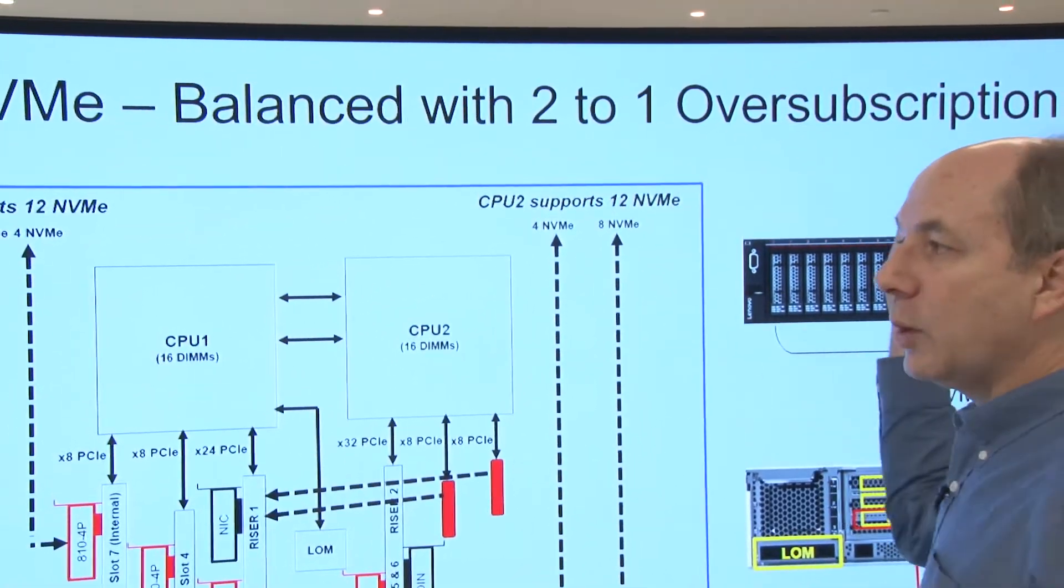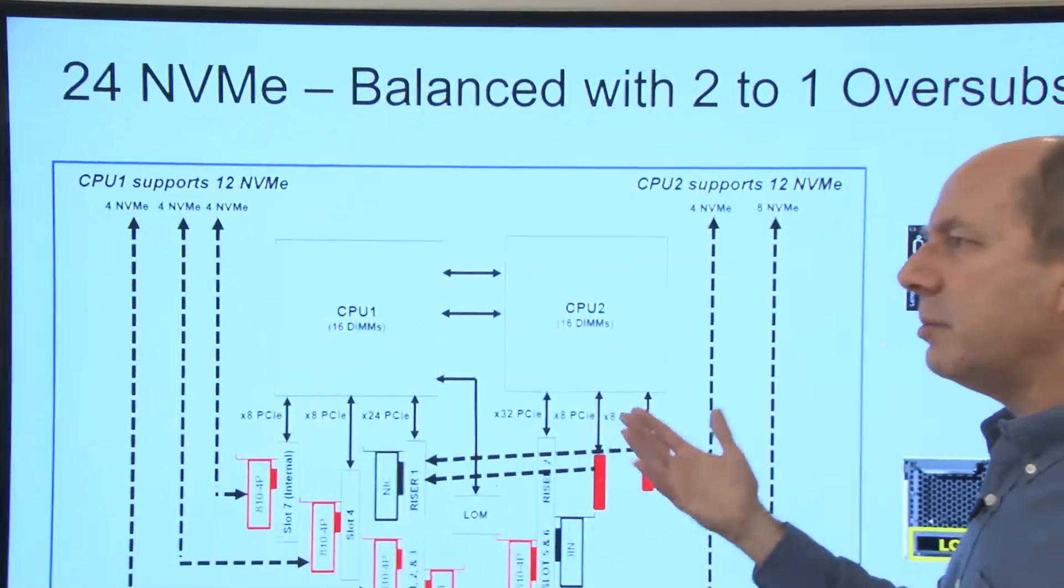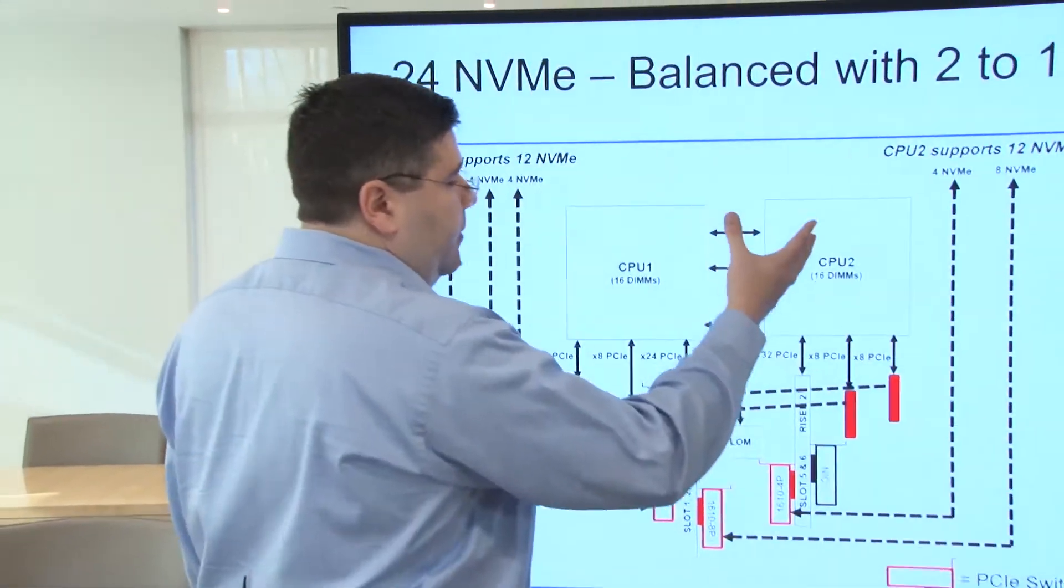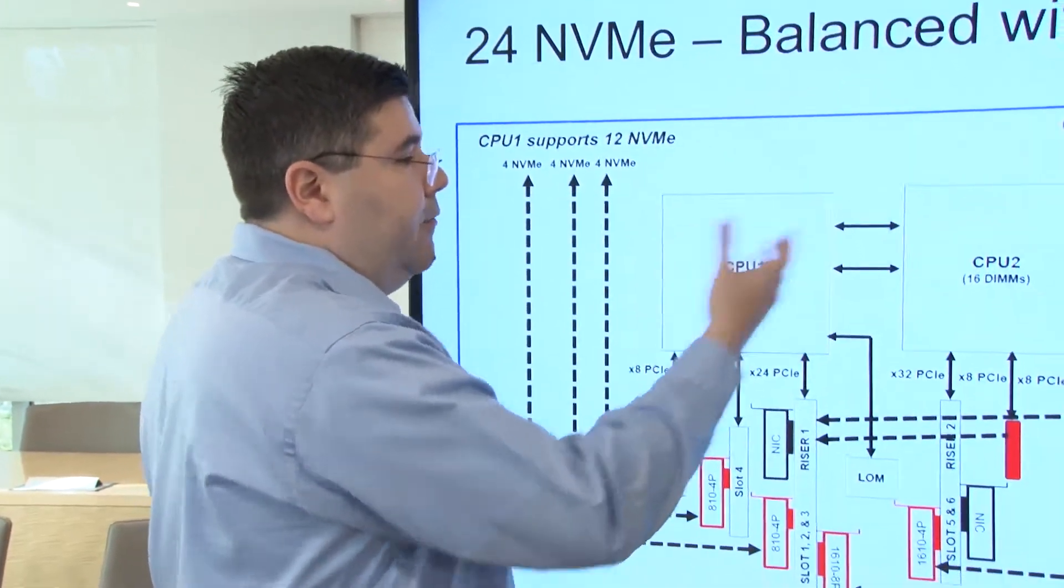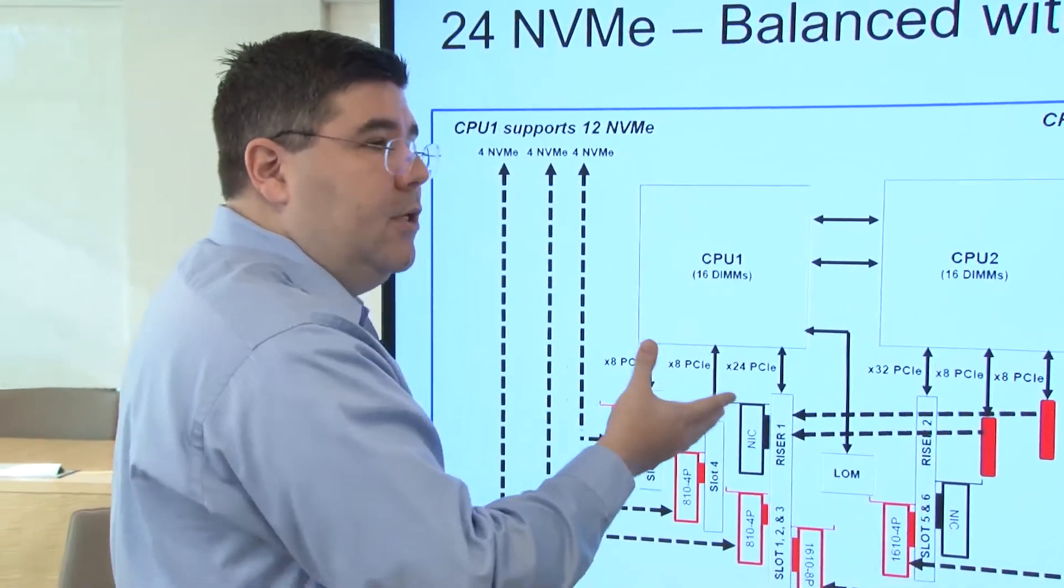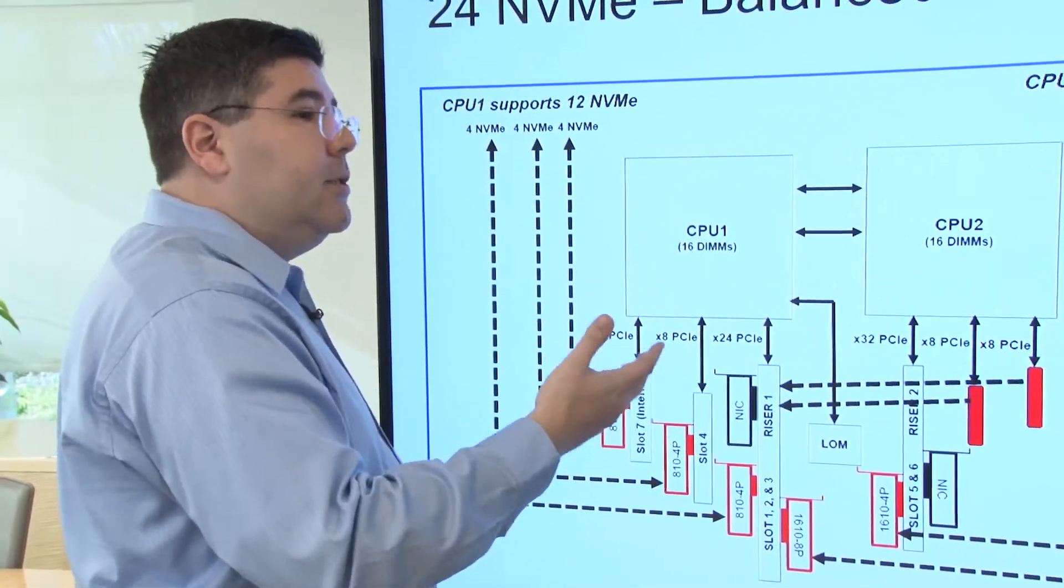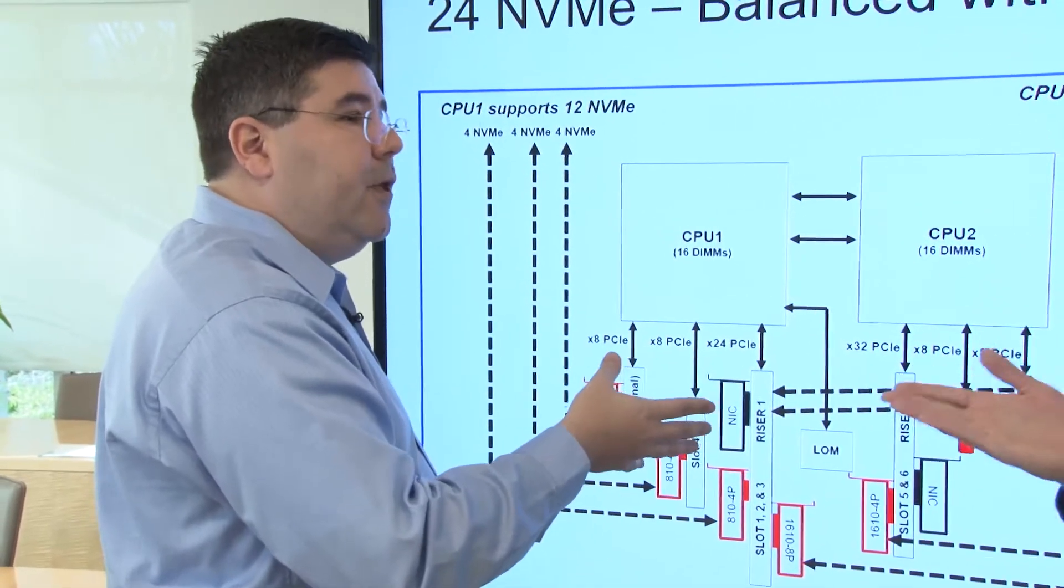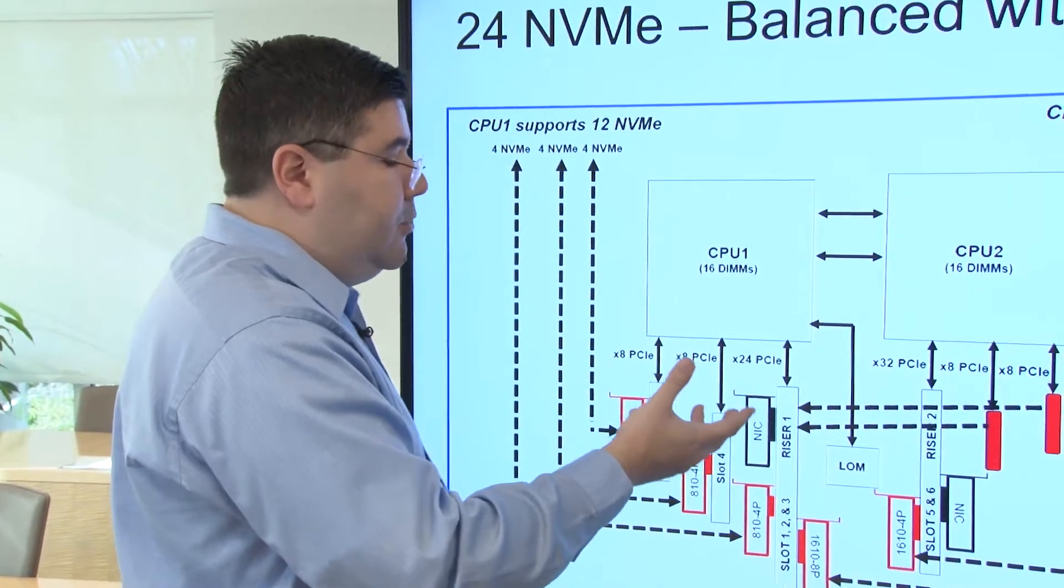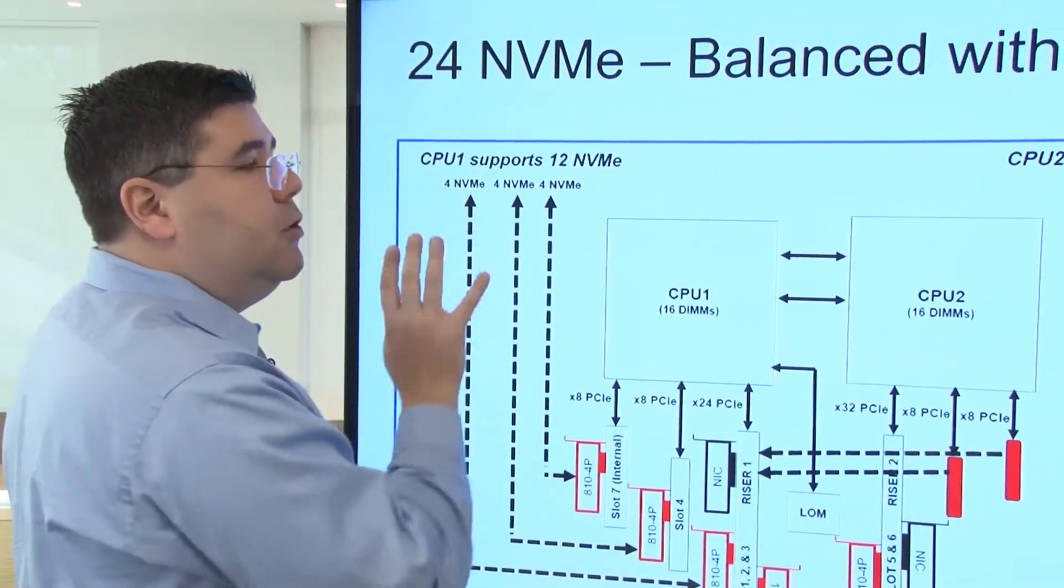Now I notice here it says that it's a two-to-one oversubscription. Yes. So there's some trade-offs with oversubscription. What does oversubscription mean and why do we need to do that? Well, oversubscription, there's a maximum amount of PCI lanes that are available within the two-socket system. And we simply have more NVMe drives than are available lanes. So some solutions might look at a higher subscription, like three-to-one or four-to-one. So you want to minimize it?